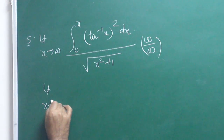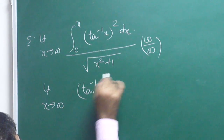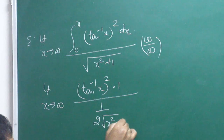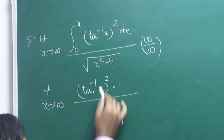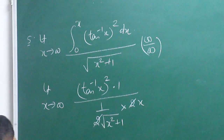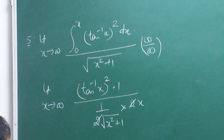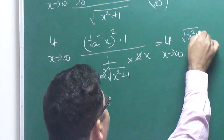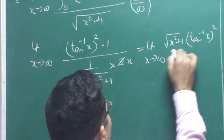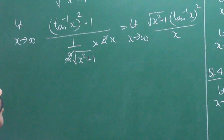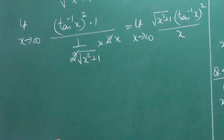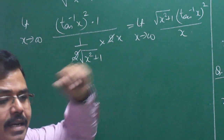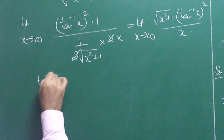After simplification, we get: limit x tends to infinity of √(x²+1) · (tan⁻¹x)² / x. This is still ∞/∞ type. Rather than applying L'Hôpital's again, let's use substitution. Let tan⁻¹x = θ, so x = tan θ. When x → ∞, θ → π/2. The expression becomes: √(tan²θ + 1) · θ² / tan θ = sec θ · θ² / tan θ.